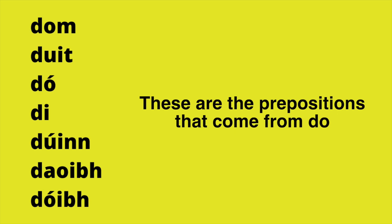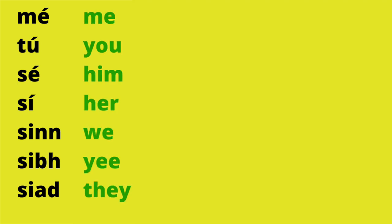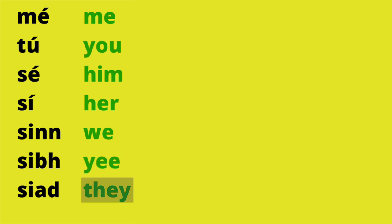We're going to look at the prepositions now, but first we have to be very clear on the personal pronouns. They are: mé, tú, sé, sí, sinn, sibh, and siad. These are the basic personal pronouns referring to me, you, him, her, we, ye (plural you), and they. It's very important to get these right first, because then we can move on to the prepositional forms.